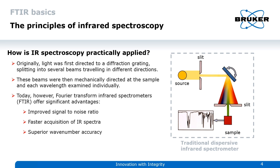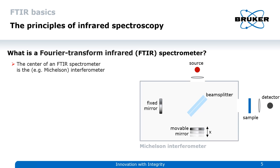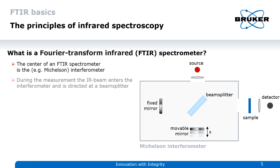But how does an FTIR spectrometer differ and how does it work? At the heart of the FTIR spectrometer is an interferometer. Shown on the right is a Michelson-type interferometer. During the measurement, the IR beam enters the interferometer and is directed at the beam splitter.